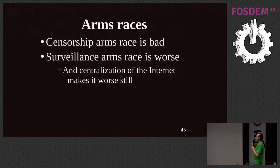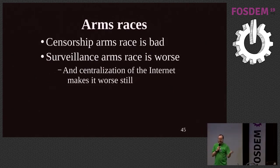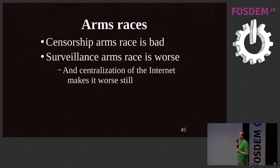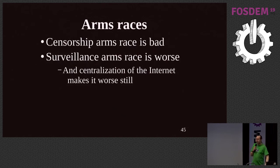One lesson: censorship arms races are crappy because China puts billions of dollars and tens of thousands of people into this. But at least you have a feedback loop — you try to connect, it doesn't work, you change something, now it works. In the surveillance case, there's no feedback loop. You connect to the TOR network, you don't know if they saw you, you don't know what databases they have, you don't know what part of the internet they can see, and you don't know whether to change something or whether changing something helped or hurt. One answer is we need a new Snowden coming out every week giving us their new documents.